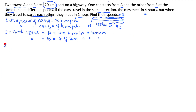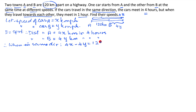So when travelling in the same direction: 4x minus 4y equals 120 kilometers. Simplifying, x minus y equals 30 kilometers. That is our Equation 1.